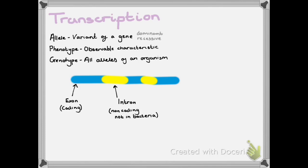You then have phenotype, which are the observable characteristics of an organism. For example, you may have blonde hair and that is your phenotype.